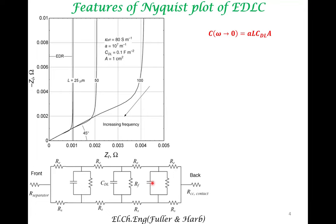An important quantity is the capacitance of a porous electrochemical double layer capacitor electrode. This is obtained when omega tends to zero — that is the overall capacitance of the electrode. This is a very practical quantity: given the thickness and cross-sectional area, what is the overall capacitance of the electrode?